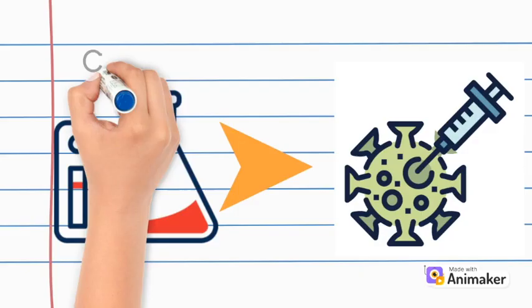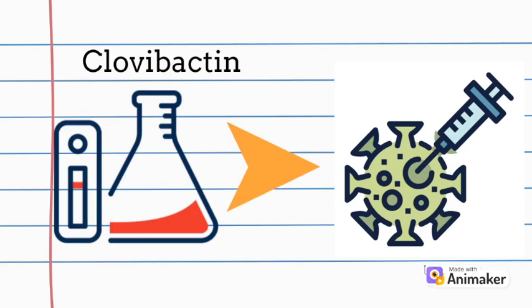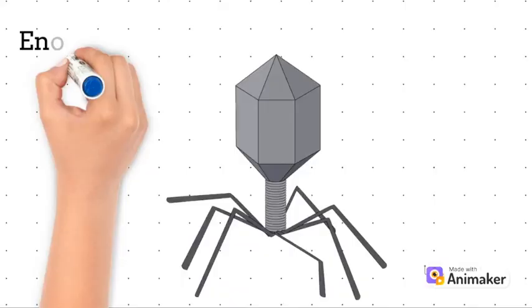One example of a new antibiotic being tested against superbugs is Clovibactin, which has been observed to kill certain superbugs, but its development has been slow and hasn't been used in humans at all. This is the state of many new drugs, and research on bacteriophages is much more advanced and promising.